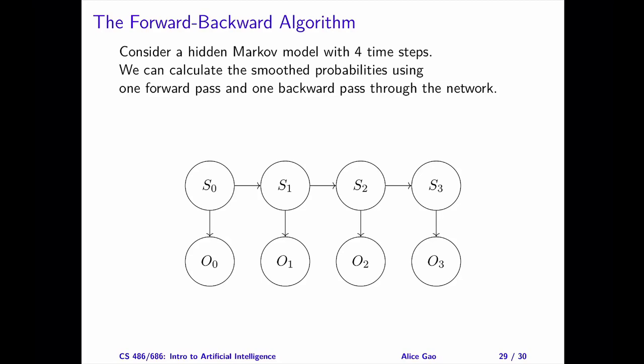Now that we understood forward recursion and backward recursion, let's put them together in the forward-backward algorithm. I'll explain the algorithm using a hidden Markov model having four time steps. The algorithm works for a hidden Markov model with any finite number of time steps.